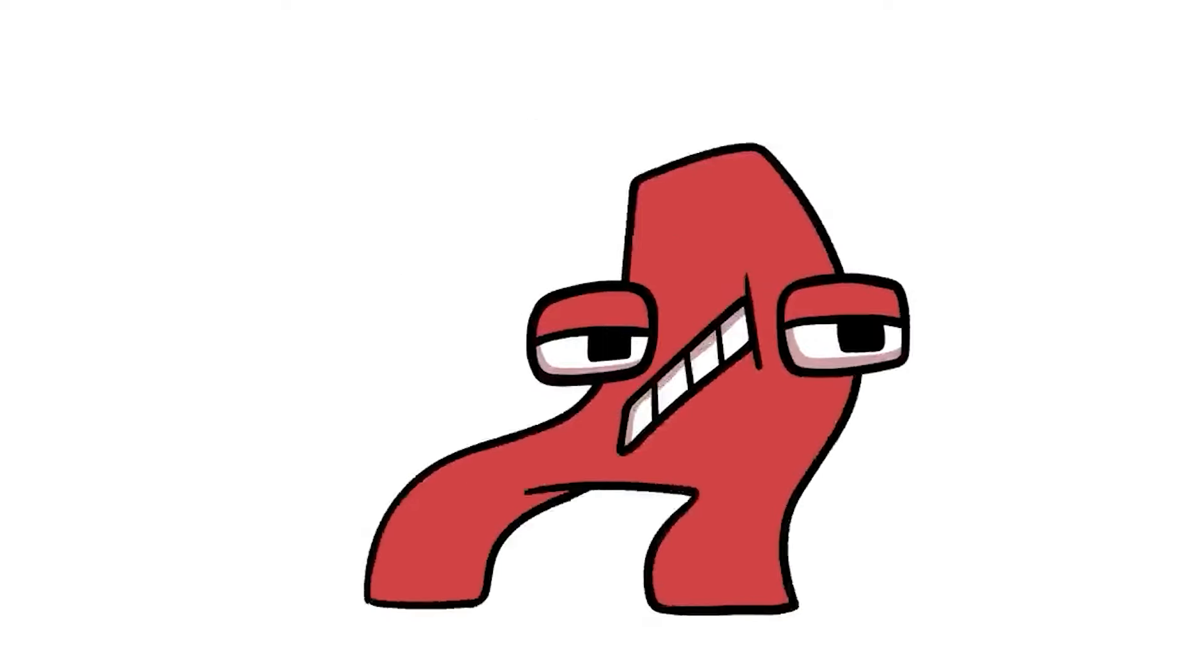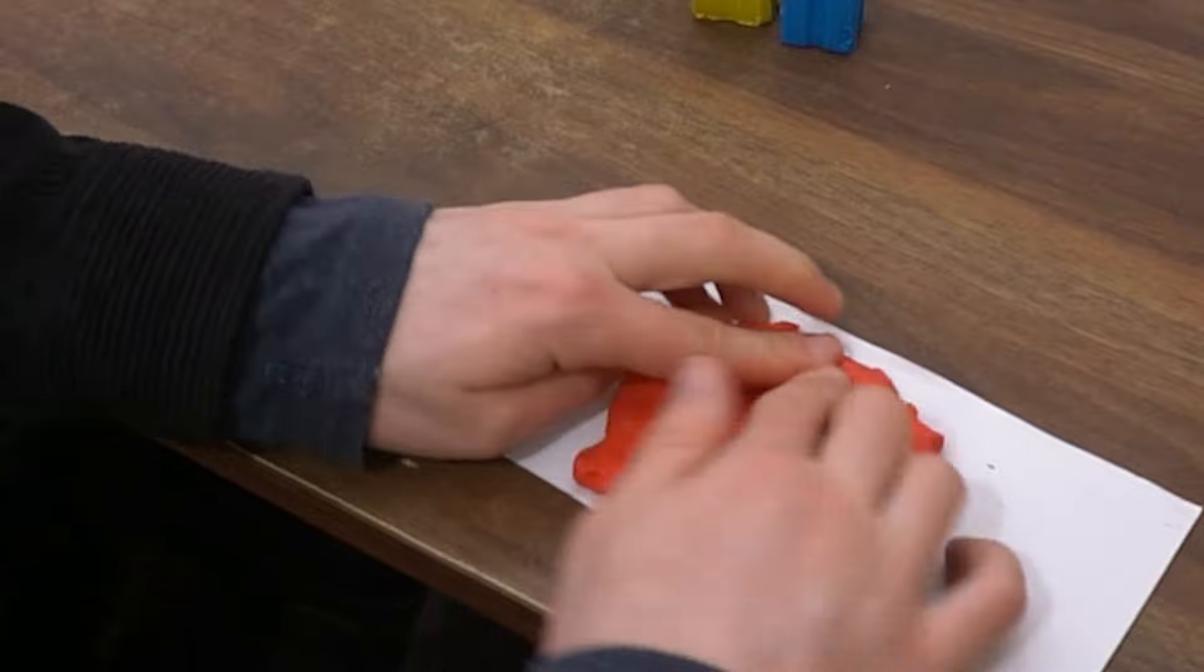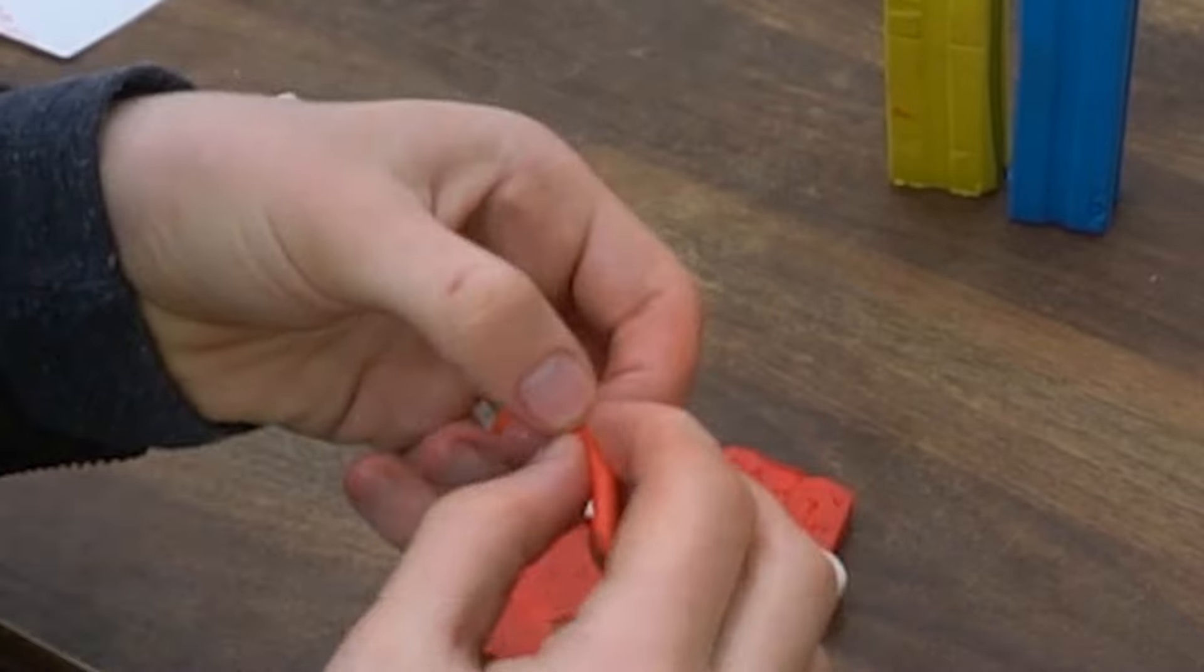First up is A. First I'll take out this red clay. Okay, now I need to cut it to shape using the paper as a guide. Next up are his eyes. I make those with some white and black clay and some of the leftover red.